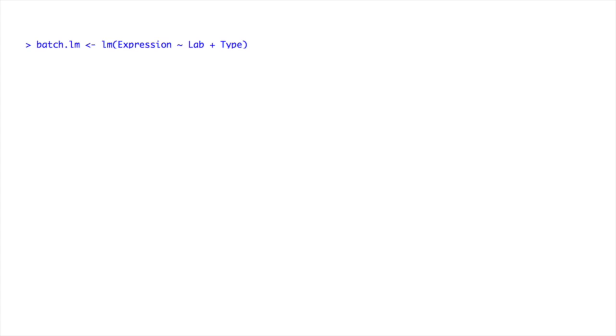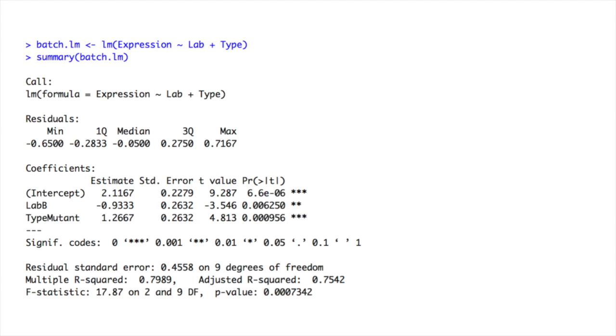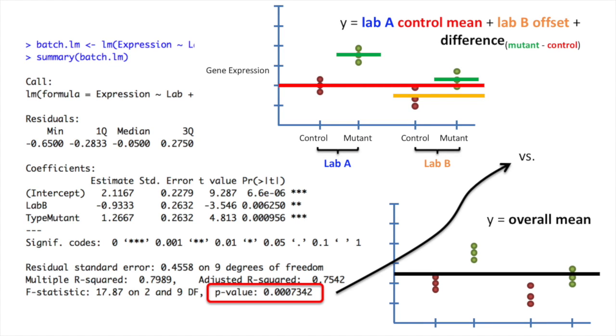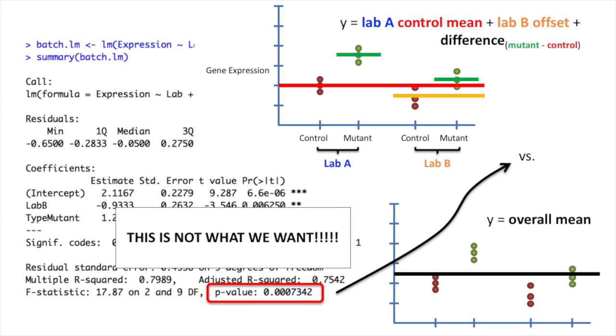Here's our call to the linear models function, and here's the summary of everything that the linear model function did for us. Just like before, it has the multiple r-squared and the adjusted r-squared values, and then a p-value in the lower right-hand corner. However, this is not what we need. This p-value represents how much better our fancy equation fits the data compared to an equation that is far too simple. This equation is just Y equals the overall mean, and it does not test if there is a difference between control and mutant data. This is not what we want.